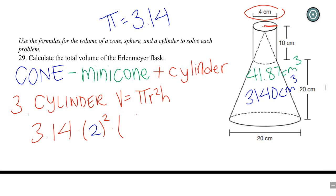And then we're going to multiply that by the height. Which would be from the base of the cylinder to the top of the cylinder. And so that's 10 centimeters. And then just type this in. So 3.14 times 2 squared which is 4. Then times 10. And that's 125.6 cubic centimeters.